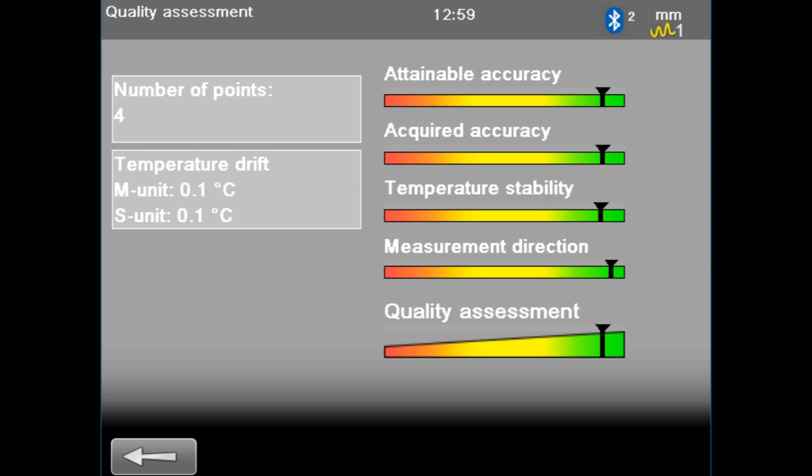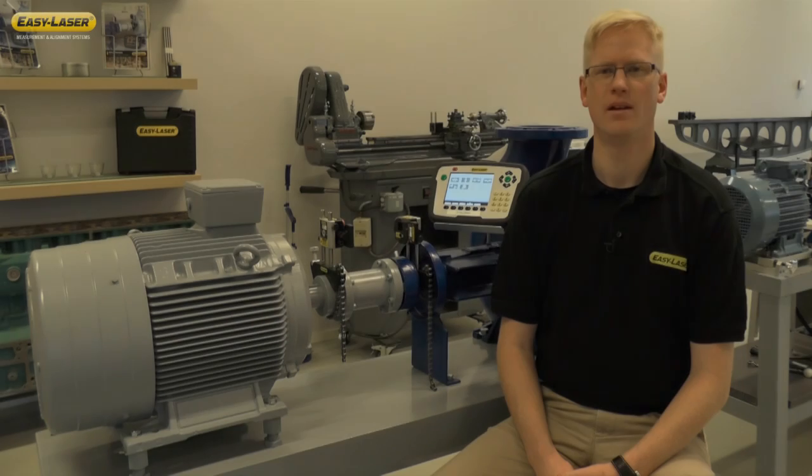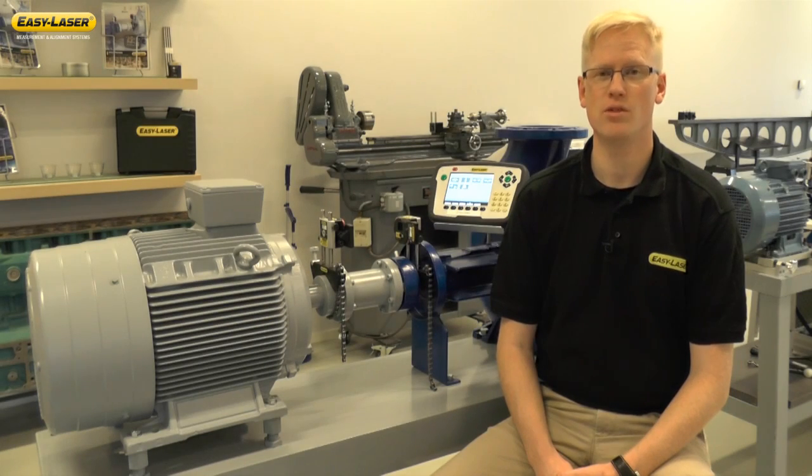This quality assessment is also available in the PDF alignment report. Multipoint measurement mode is used on large turbine machinery or when you are aligning two machines whose shaft you cannot rotate.